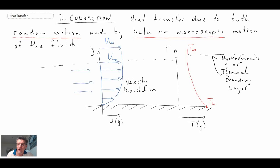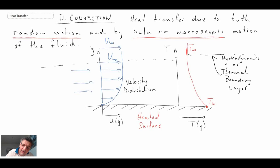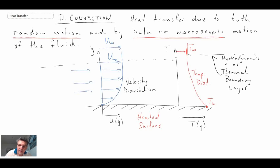In a like manner, we also have a thermal boundary layer. We go from the temperature of the wall at the wall — and this would be a case where we have a heated surface, because the temperature of the wall is higher than that of the surroundings — and then as we go out of the thermal boundary layer, we return to T-infinity, the free stream temperature. Given the wall is hotter than the fluid, the heat flux is moving away from the wall.